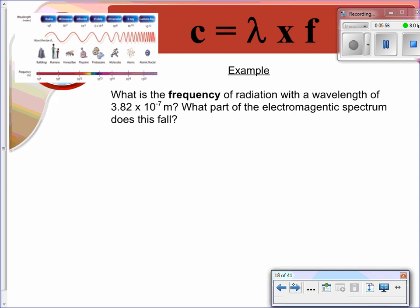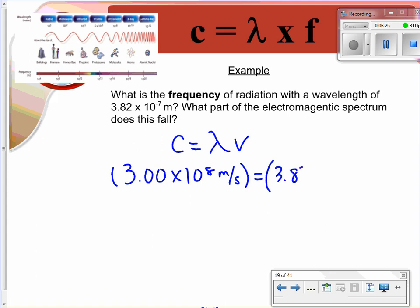So if we're going to solve a problem with this, it says: what is the frequency of the radiation with a wavelength of 3.82 times 10 to the negative 7 meters? Our equation is c equals wavelength times frequency. We're looking for frequency, so you can either rearrange or plug in. I prefer to plug in. My speed of light is 3.00 times 10 to the eighth meters per second. My wavelength is 3.82 times 10 to the negative 7th, and I don't know my frequency. Rearrange, solve, and I'm going to get 7.85 times 10 to the 14th hertz.